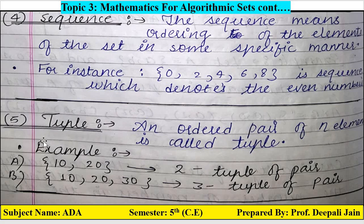Fifth topic is tuple. An ordered pair of n elements is called a tuple. For example, (10, 20) is a 2-tuple of pairs; (10, 20, 30) is a 3-tuple of pairs. So the number of elements determines the type — an ordered pair of n elements is called the tuple. Topic three and its sub-topics are now complete.